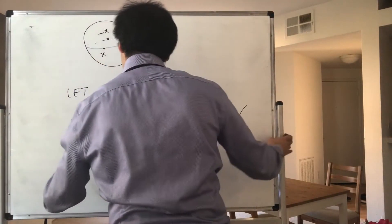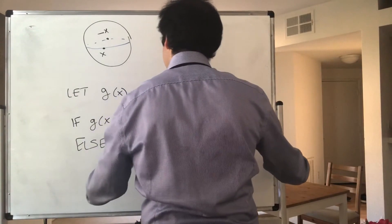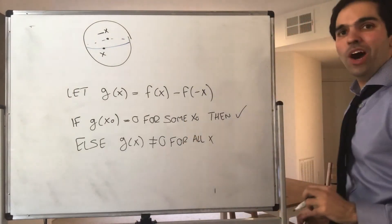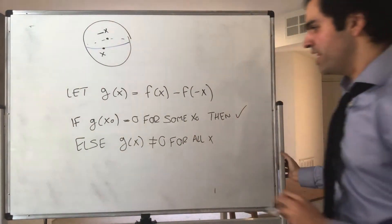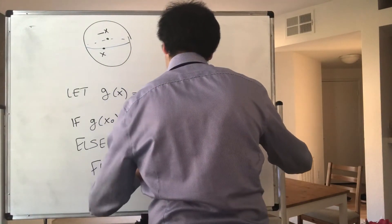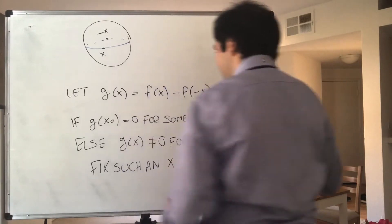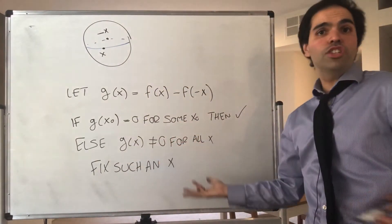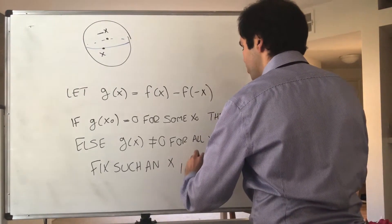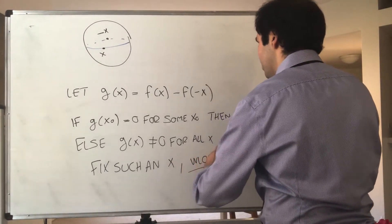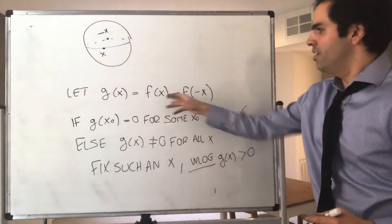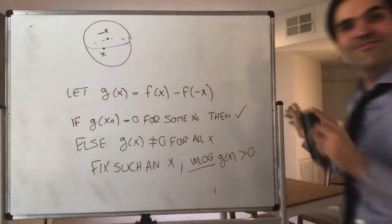Else, we know that g(x) is never equal to 0 for all x. That would be the opposite of that statement. So fix some x. Fix such an x. And since g(x) is non-zero, either g(x) is positive or it's negative, but it doesn't really matter, you'll see why. So without loss of generality, assume g(x) is positive. So g(x) is positive.